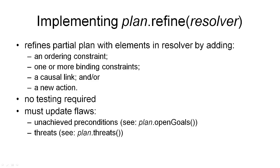Once we have computed the potential resolvers for a given flaw in our plan, we need to select one of these and apply it to the current partial plan. So we refine our current partial plan using the resolver we've just computed. The way this is done is very simple. We have to add elements to the plan, namely those elements that are specified in our resolver.